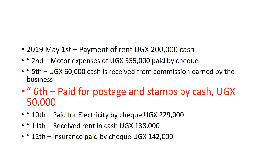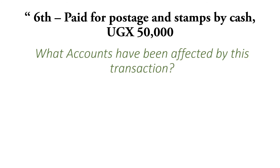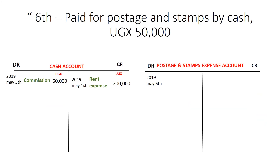On the 6th, paid for postage and stamps by cash, 50,000. The accounts affected: we paid in cash, so the amount of cash in the business has reduced. We are paying for postage stamps, which is an expense, so the postage stamps expense increases. The decrease in cash is going to be credited, so we credit the cash account by 50,000. We then finish our double entry by debiting the postage and stamps expense account by 50,000. The other item affected is cash, and this took place on 6th May 2019.